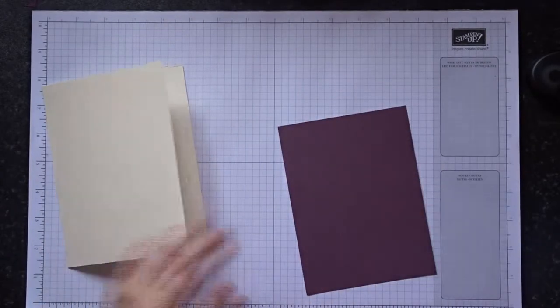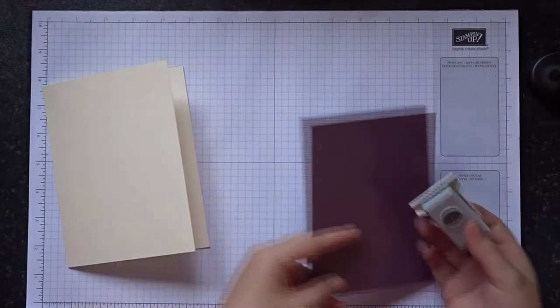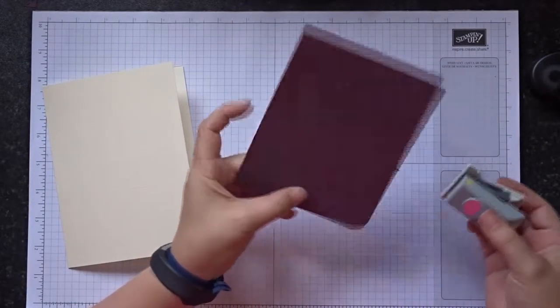What we're going to do is round the corner, so I've got my one inch corner rounder. I'm just going to round off all of these corners.